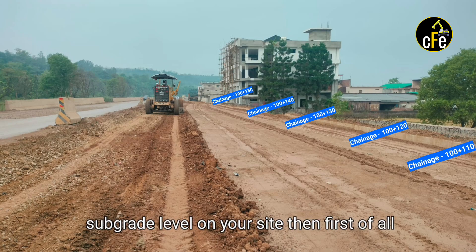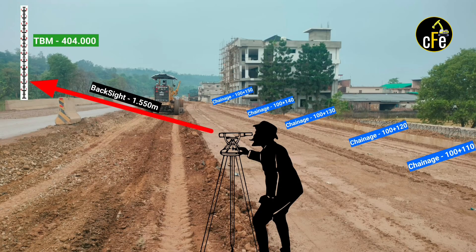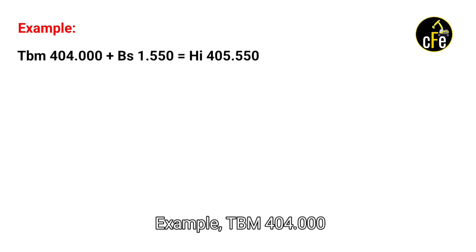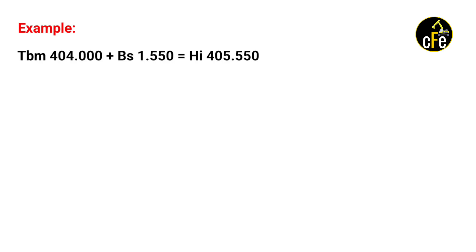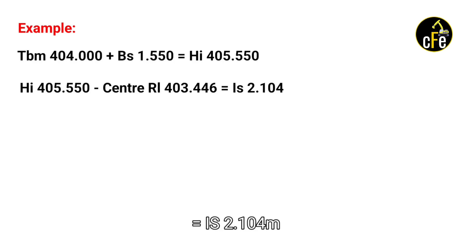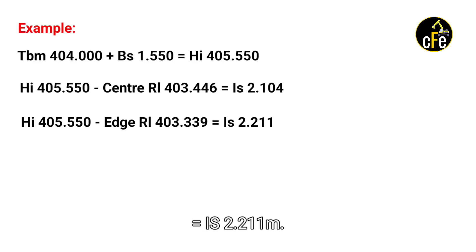To give subgrade level on site, first place the staff on the TVM and read the backsight reading. Use two formulas: Formula 1 — HI = TVM + Backsight; Formula 2 — IS = HI − RL. For example: TVM 404.000 + Backsight 1.550 = HI 405.550. Then: HI 405.550 − Center RL 403.446 = IS 2.104; and HI 405.550 − Edge RL 403.339 = IS 2.211.